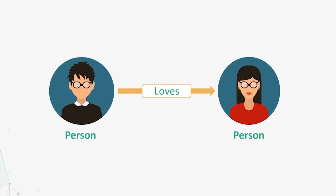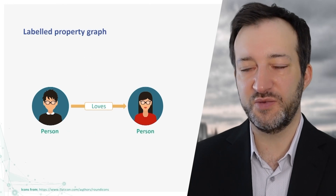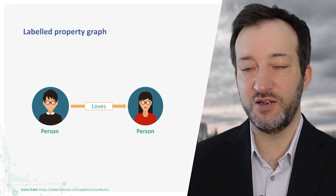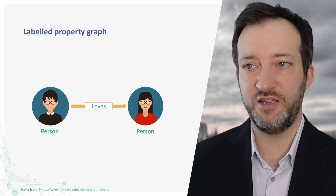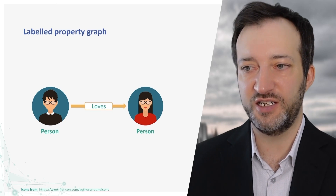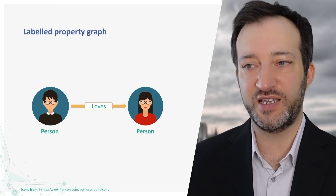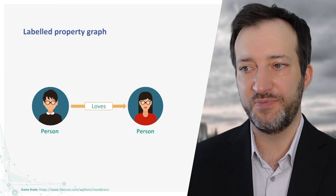We can also label the relationship between them. So we could create a relationship here and we could call the relationship 'loves.' This could be any kind of relationship — it could be admitted at a particular time, discharged at a particular time, takes, likes, loves — anything that you can think of that's relating two things together can be used as a relationship here.